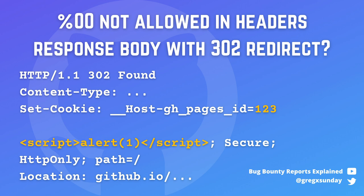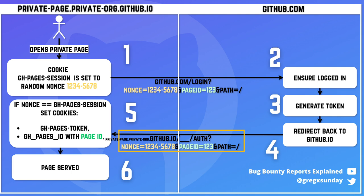In fact, this was a 302 redirect, where generally the response body is not processed by the browser. But here, luckily, the location header was after our injection point, so it was not treated as a header. And in 302 responses without the location header, the body is processed normally. With that, we can inject HTML code in the response and execute arbitrary JavaScript code, reaching our XSS.